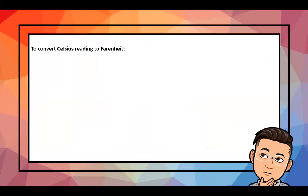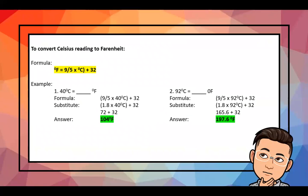Now let's discuss how to convert Celsius readings to Fahrenheit using the formula: degrees Fahrenheit = (9/5) × degrees Celsius + 32. First example: convert 40°C to Fahrenheit. Substitute: (9/5) × 40 + 32. First simplify: 9/5 = 1.8, then 1.8 × 40 = 72, and 72 + 32 = 104 degrees Fahrenheit.